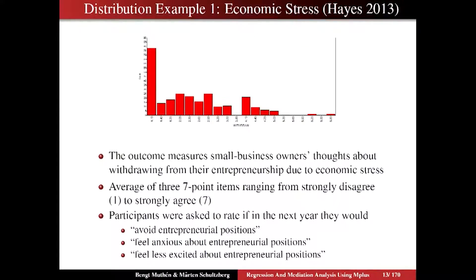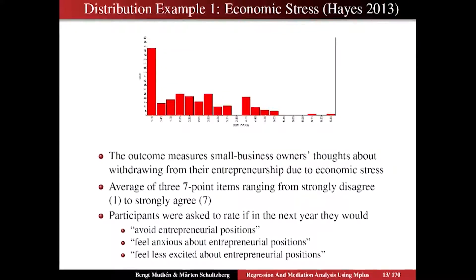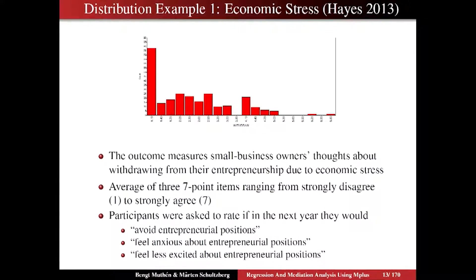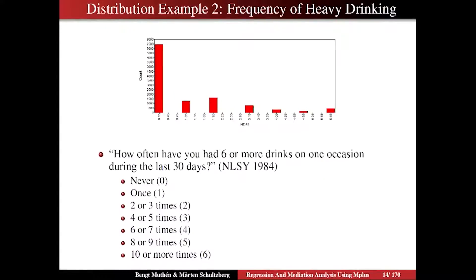Well, it's not really categorical — we have an awful lot of categories because there are many distinct values given that we average three seven-point items. Let's forget about categorical unless we want to categorize this variable, but that would lose information. It's not counts either. So here we should really do censored modeling — modeling that avoids the linear regression assumption, formulates a model for people at the floor effect, and specifies a correct model for the tail. Censored modeling for that.